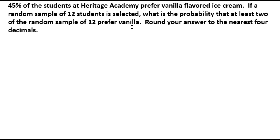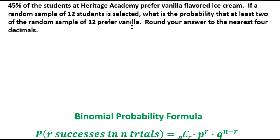That looks a little bit complicated. There is a formula that we can use — it is the binomial probability formula. There's a lot to it, and what we need to first do is determine what we're going to do on this one to find at least 2.